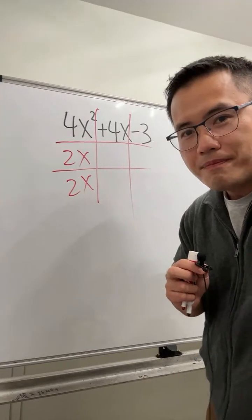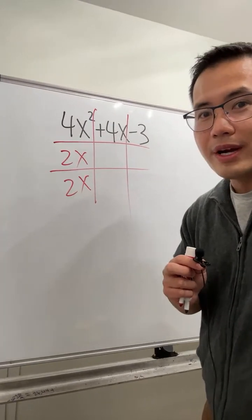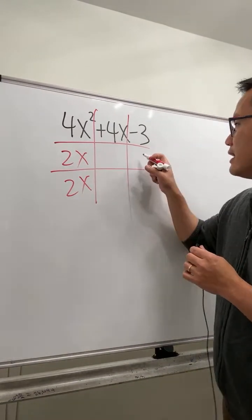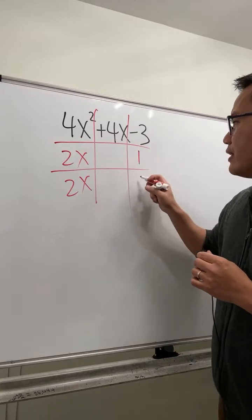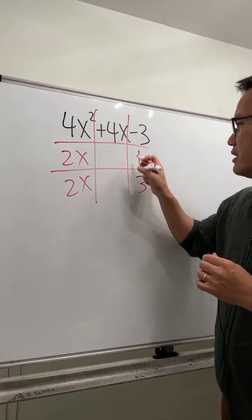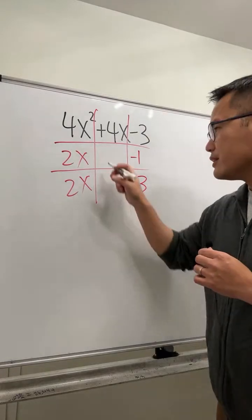We can try 3 and -1, or -3 and 1, right? So let's go ahead and put 1 here and 3 here, and let's make this negative. But if you do that, you see this